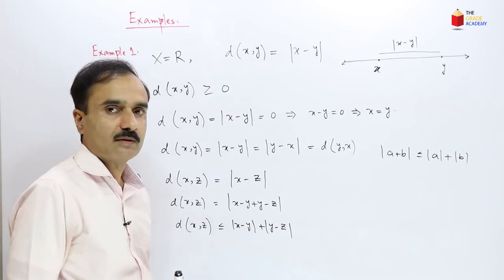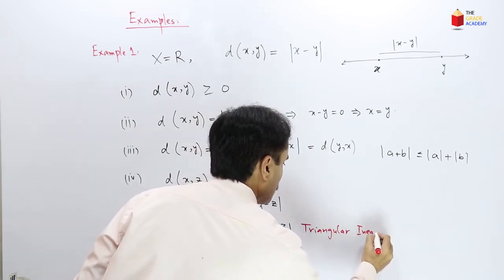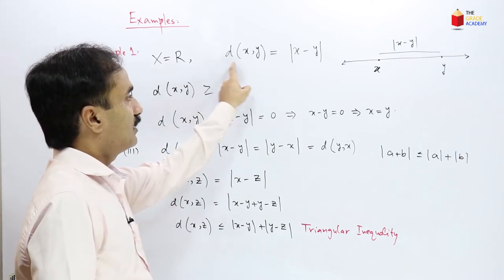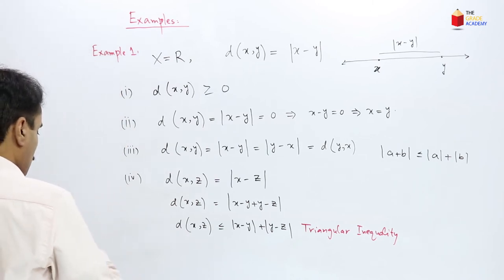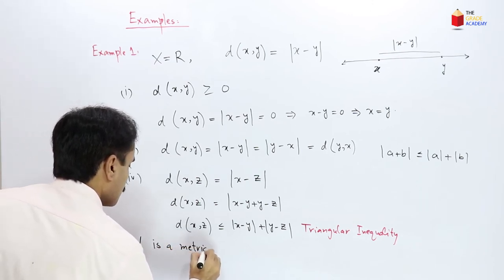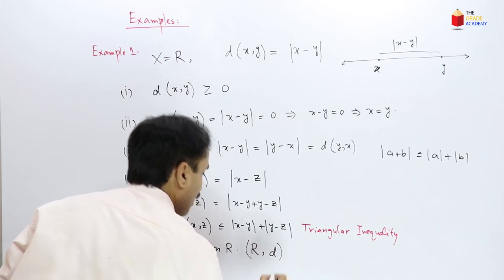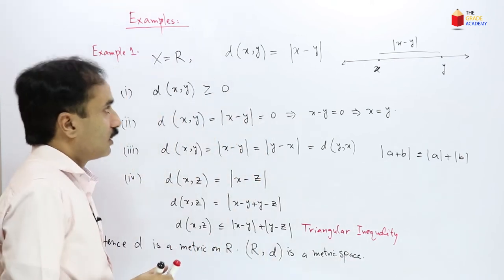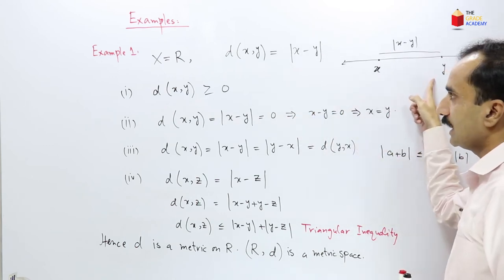It also satisfies the triangular inequality. Hence, this distance function d(x,y) = |x − y| is a metric on the set of real numbers, meaning d is a metric on ℝ. So ℝ together with this metric d — (ℝ, d) — is a metric space. The set of real numbers with its usual distance function is a metric space.